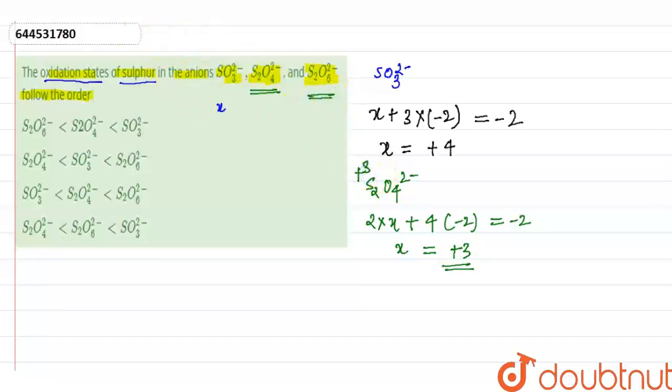In the third one, S₂O₆²⁻, 2x + 6(−2) = −2. So here x is equal to +5. The oxidation state of sulfur in S₂O₆²⁻ is +5.